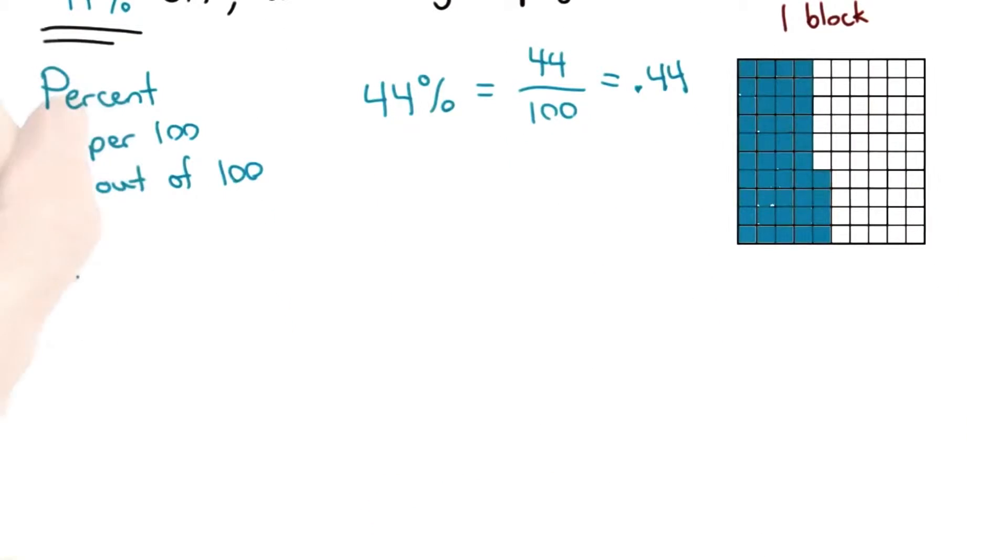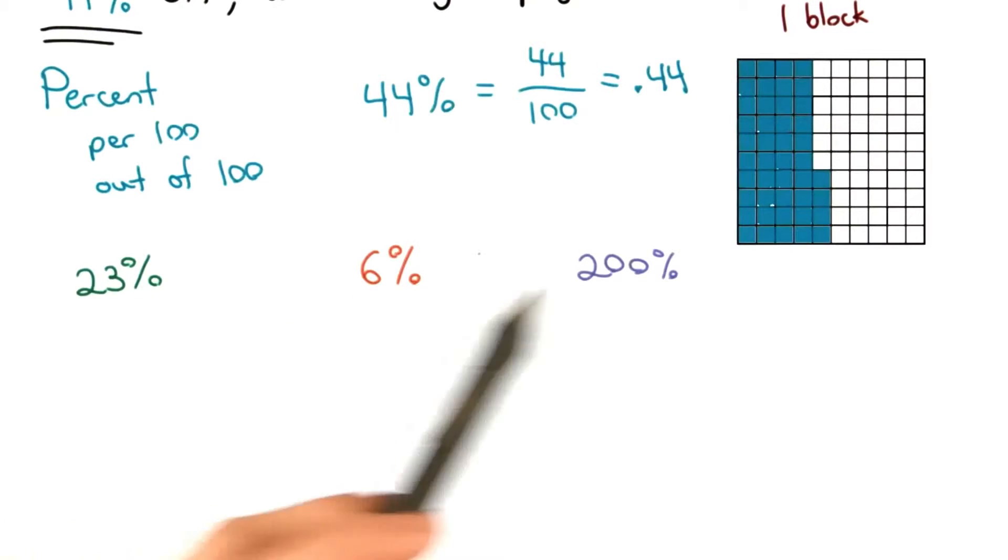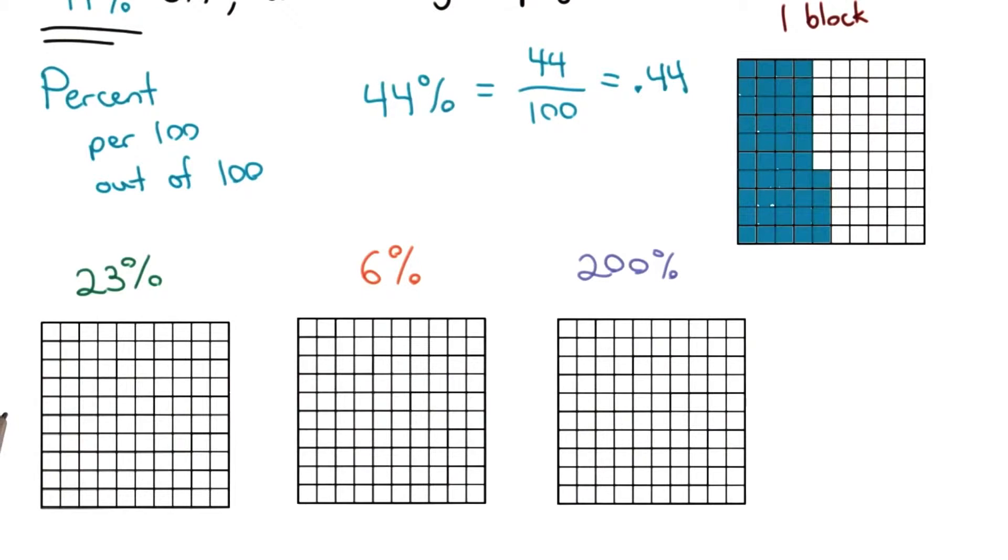Okay, here are some other percents. I could have 23%, 6%, or 200%. I'm going to convert these percents to decimals. Sometimes we need to convert percents to decimals in order to use them in problems, or to multiply. So let's use these hundred blocks to help us out.